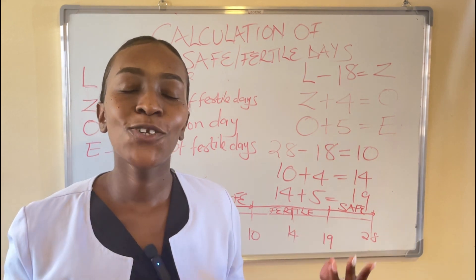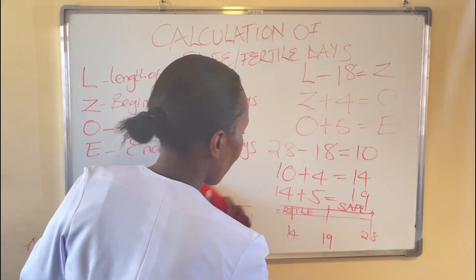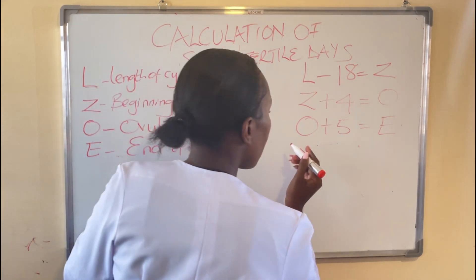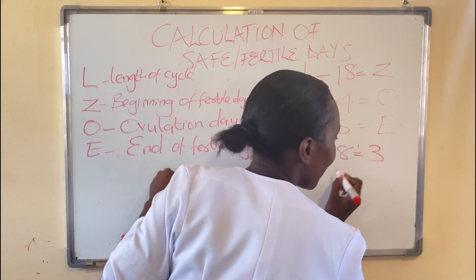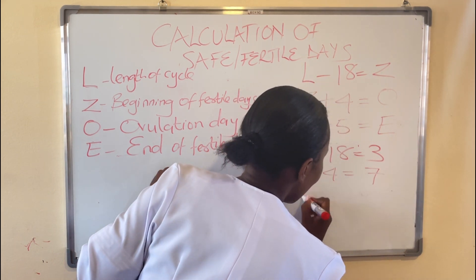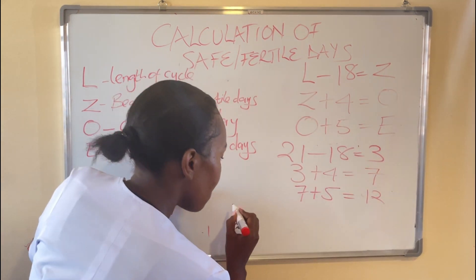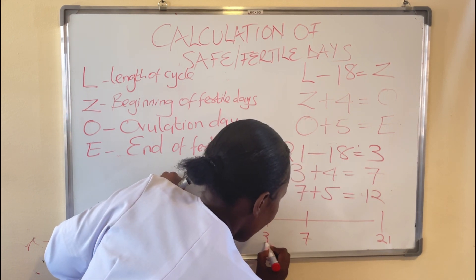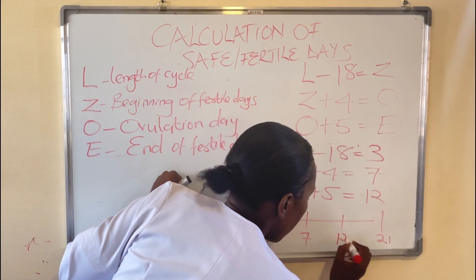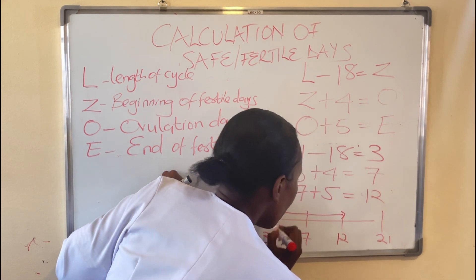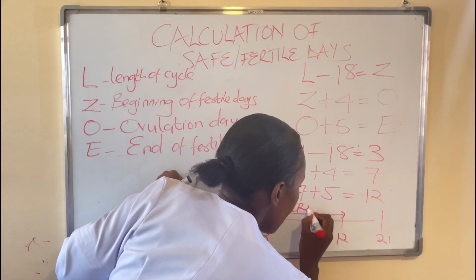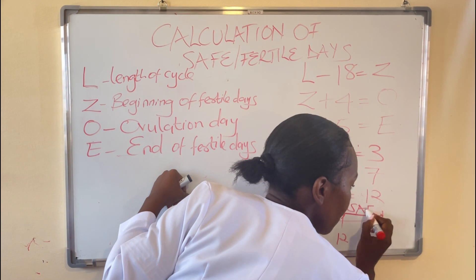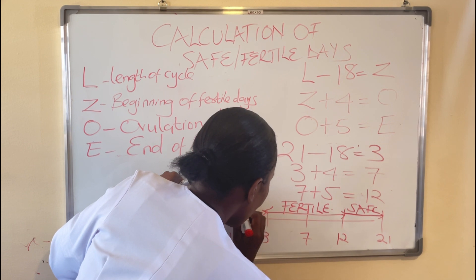Now let us look at a woman with a 21-day cycle. We will say 21 minus 18, that gives us 3. 3 plus 4 is 7. And 7 plus 5 is 12. So for this woman, day 1 is the start of her cycle, her ovulation day is on day 7, the beginning of her fertile days is day 3, and the end is day 12. From day 3 to day 12, this woman is fertile. From day 13 to day 21, she is safe. And on day 1 to day 2, she is safe.